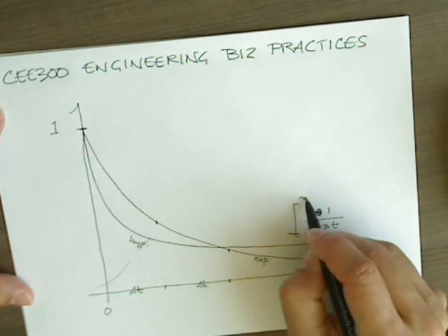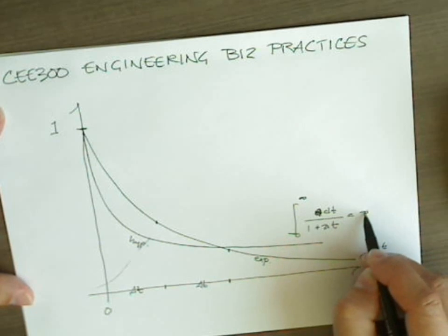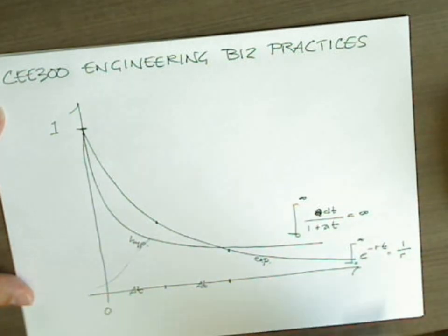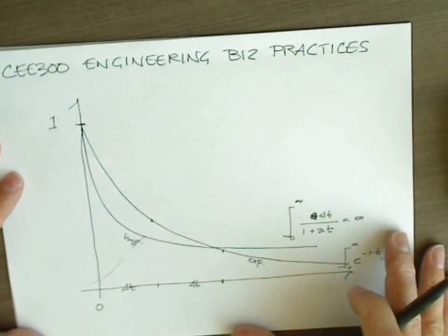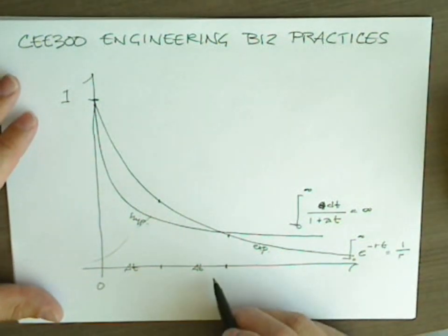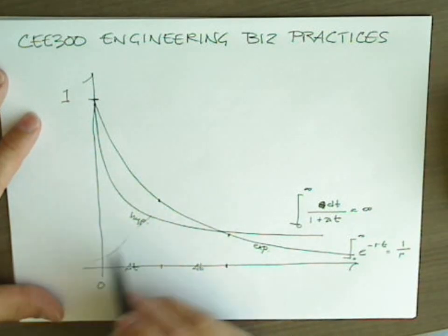The hyperbolic discounts more in the near term and less in the long term. As a matter of fact, I compared the integrals and said, the area under this is infinite, whereas the area under this curve is, for all discount rates greater than 0, finite. We don't have the same basis for the hyperbolic.